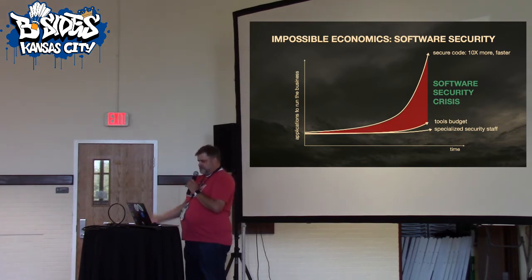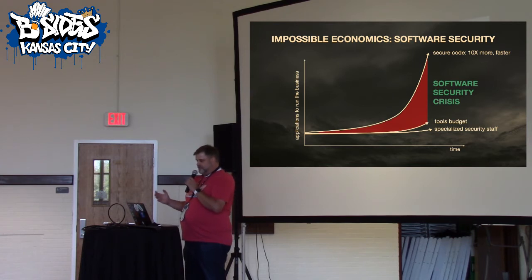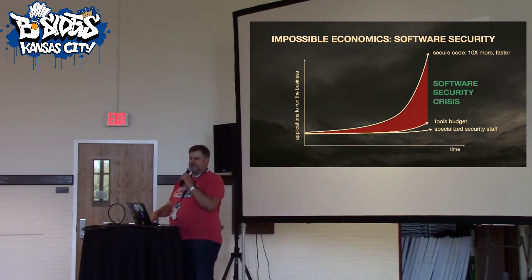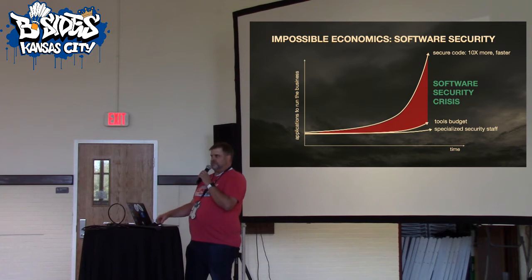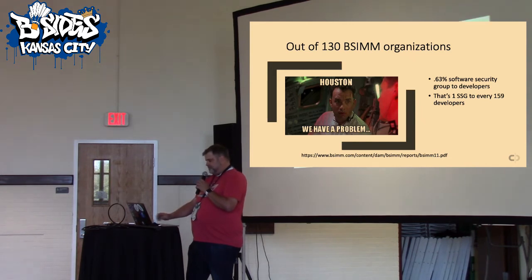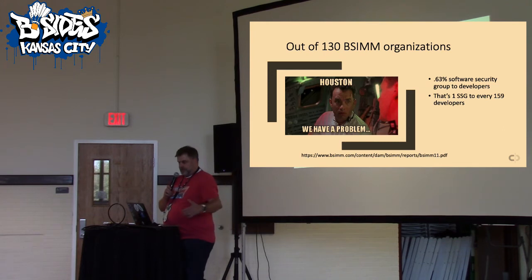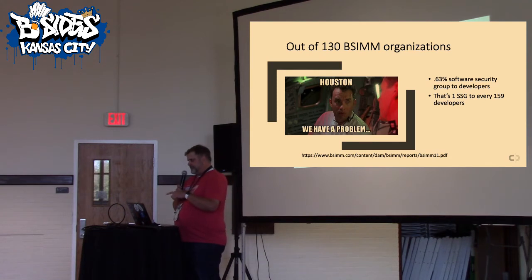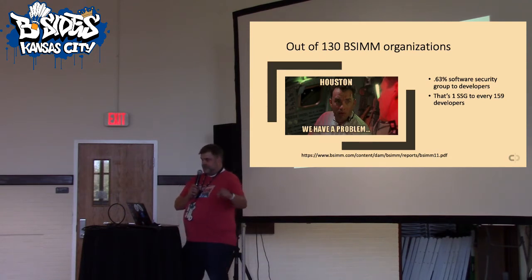At the same time, we have what I like to call a software security crisis. We have specialized security staff — very few of them. We have specialized tools, and there are thousands of them out there. But we're still writing more and more code, faster and faster. The last stat I saw: the average professional developer writes about 10,000 lines of brand new code every single year, and there are about 30 million professional developers in the world. The latest results from BSIMM show there's only one application security expert for every 159 developers — that's not feasible.